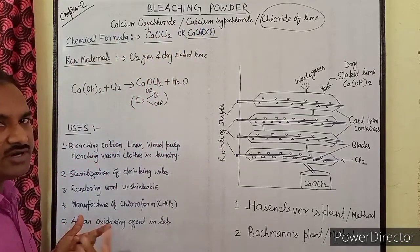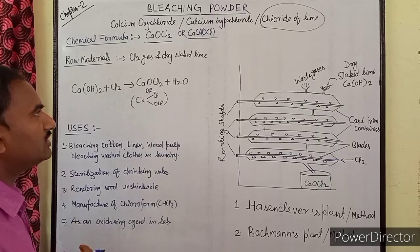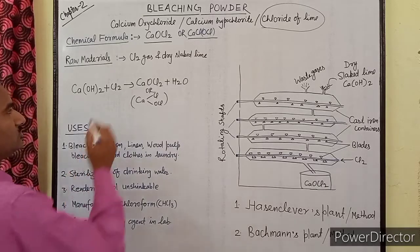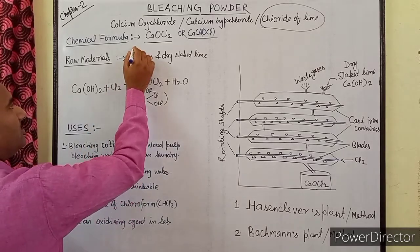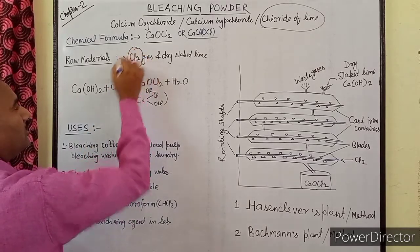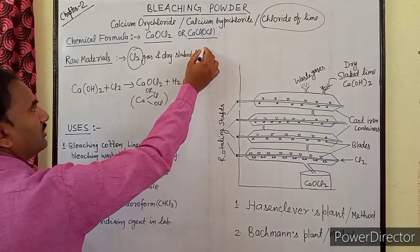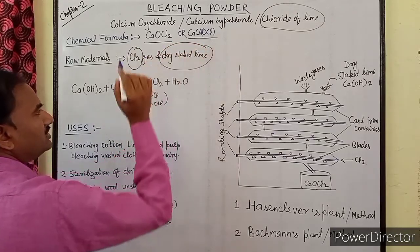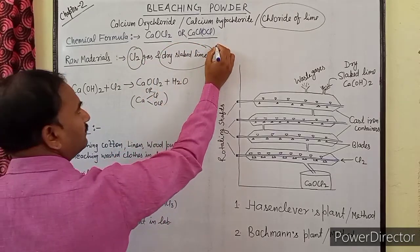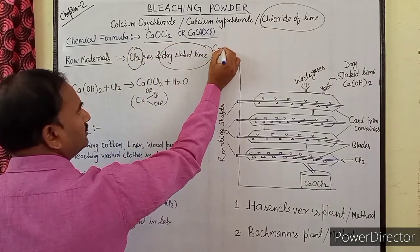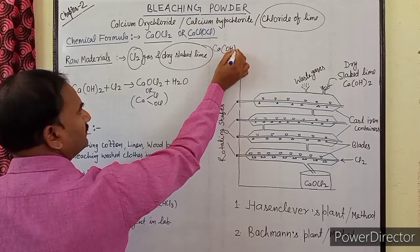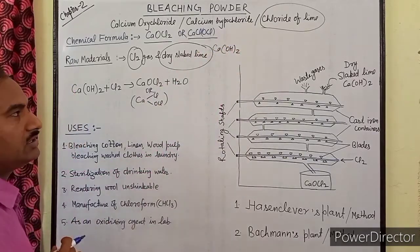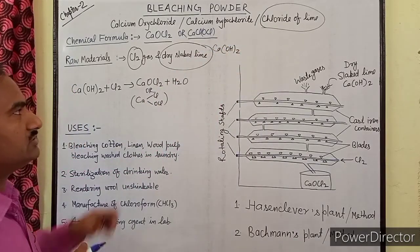For its preparation, we will talk about raw materials. The first raw material is chlorine gas, and the second raw material is dry slaked lime, which means dry calcium hydroxide, Ca(OH)₂.